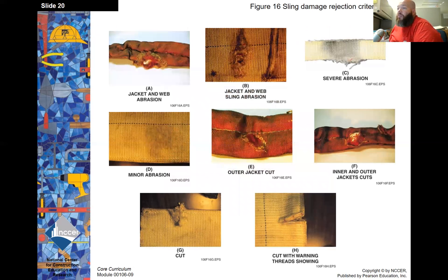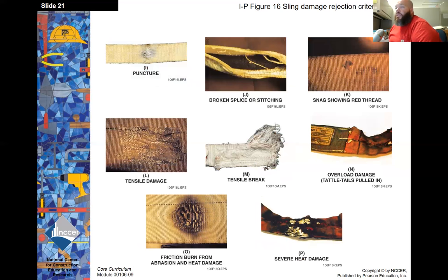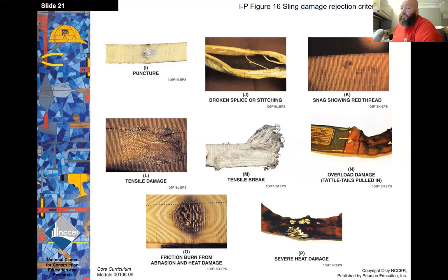Here is rejection criteria for slings: damage to the jacket (A), abrasions (B), severe abrasions (C), minor abrasion (D), outer jacket cut (E), inner and outer cuts (F), a cut (G), and a cut with warning threads showing (C). Additional rejections include: puncture (I), broken splice or stitching, snags showing red threads, tensile damage (L), tensile break (M), overload damage with tattletales pulled in (N), friction burn from abrasion and heat damage (O), and severe damage (P).